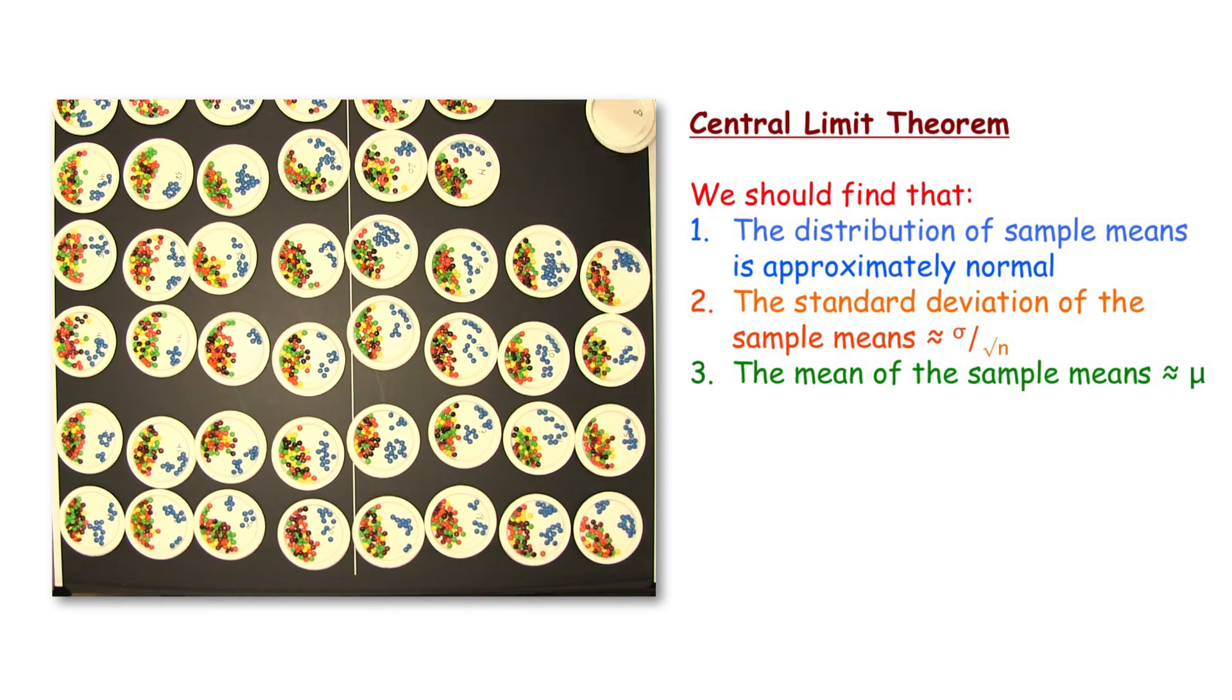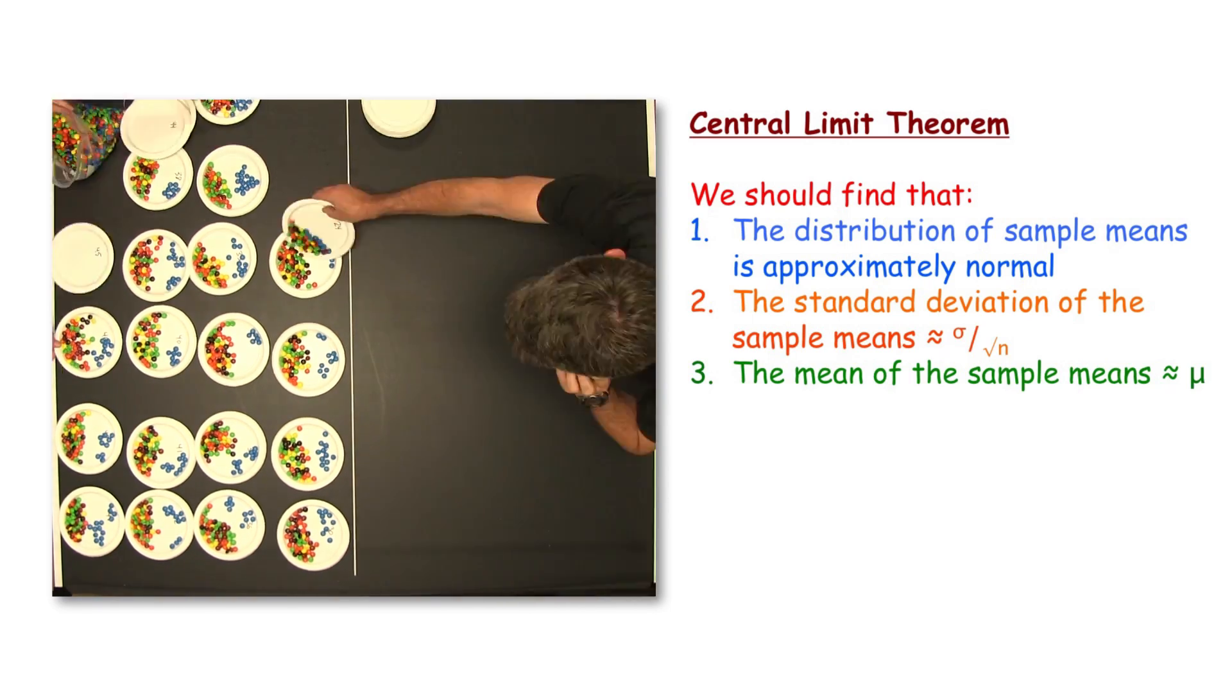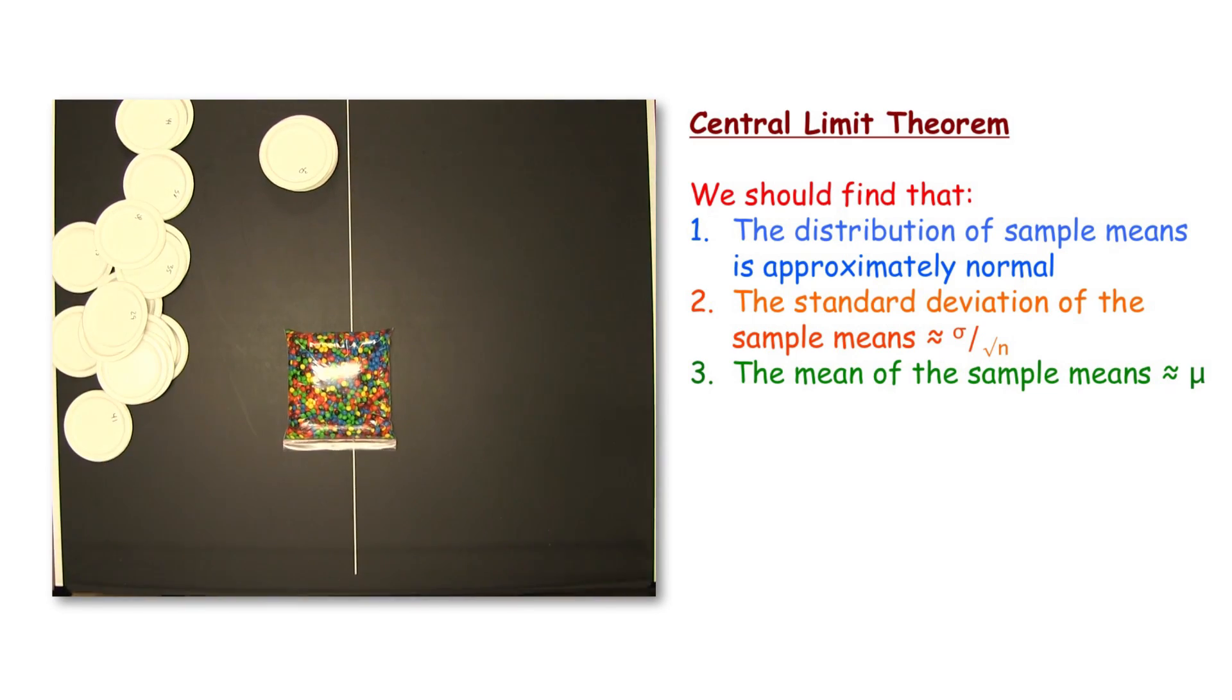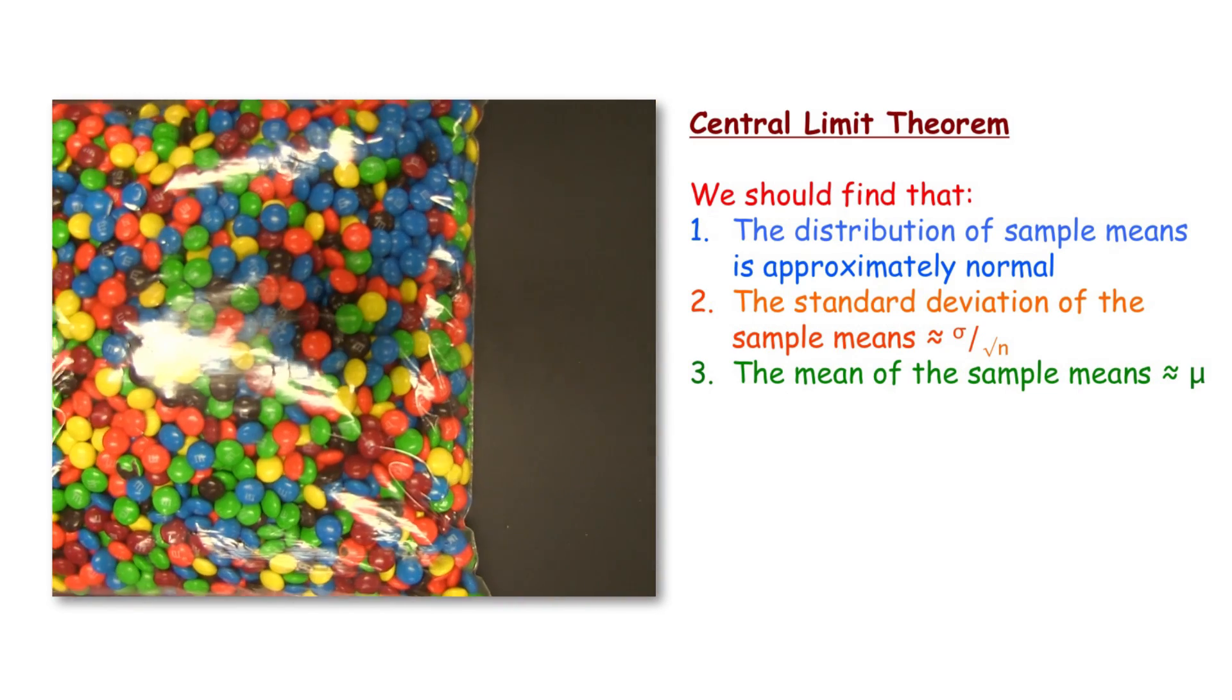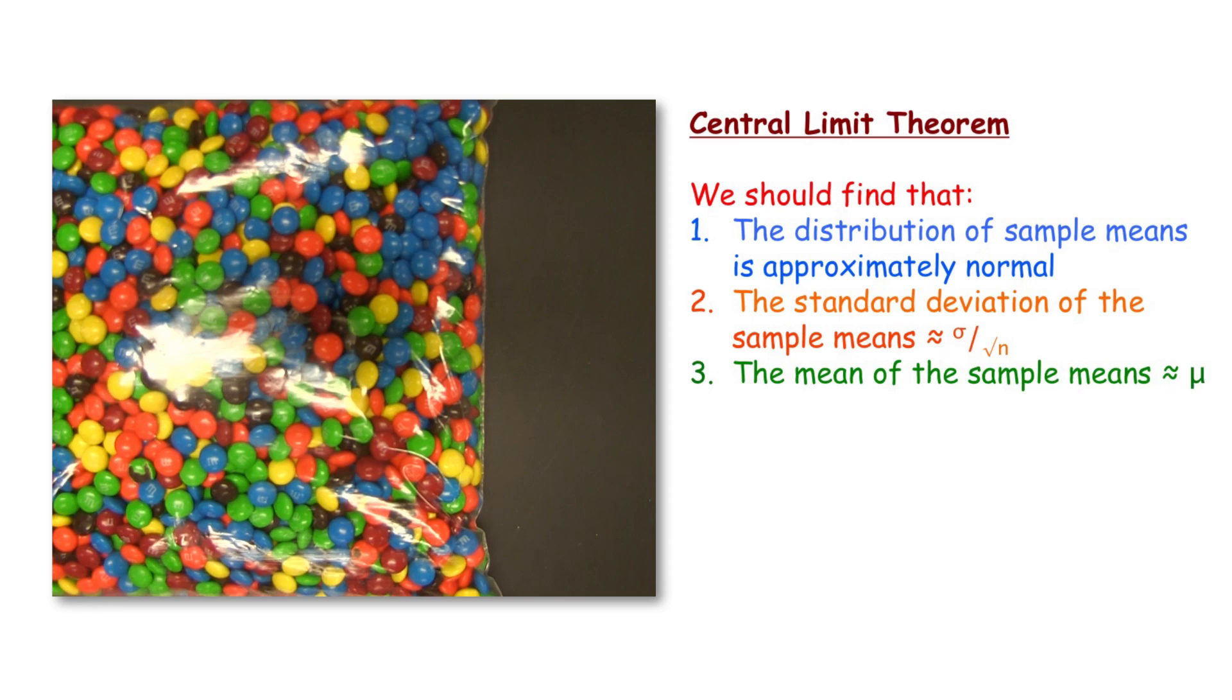Remember, the central limit theorem also says that the standard deviation of the distribution of sample means is equal to sigma, the population standard deviation, divided by the square root of the sample size. Let's see how the data turned out.